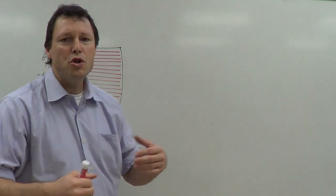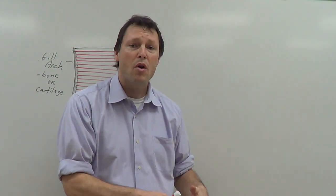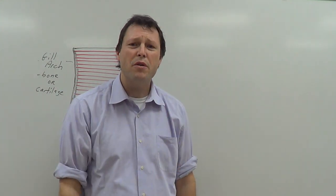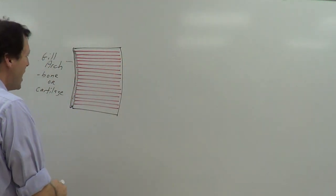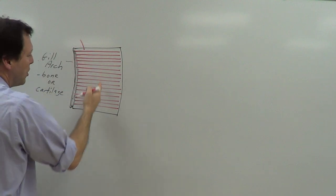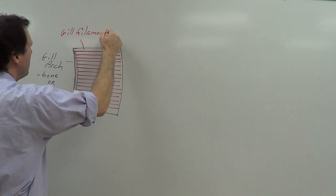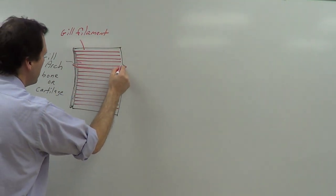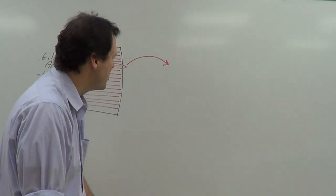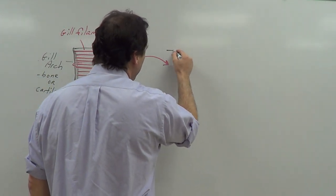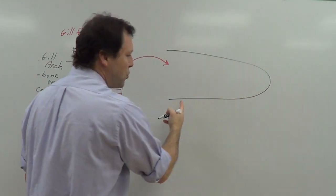The reason for that rich blood supply is that in order for diffusion to occur, we need to get the blood and the water — in the case of gills — or the blood and the air as close to each other as possible. So we want a very, very vascular gill here. These finger-like projections are referred to as gill filaments. I'm going to take one of these gill filaments, enlarge it, and draw it as a long finger-like projection.